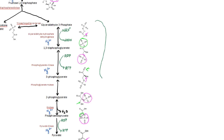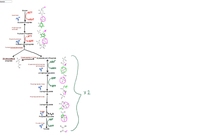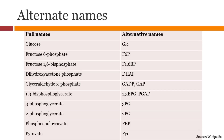Remember that you have 2 molecules of glyceraldehyde 3-phosphate, therefore this process will happen twice per glucose molecule, so you will get 2 pyruvate molecules at the end of glycolysis. Here is the overall picture. Take a look at the flowchart provided on this page for glycolysis. Here are some alternate names you might have seen for some of the intermediates — you can choose to use them depending on your preference.